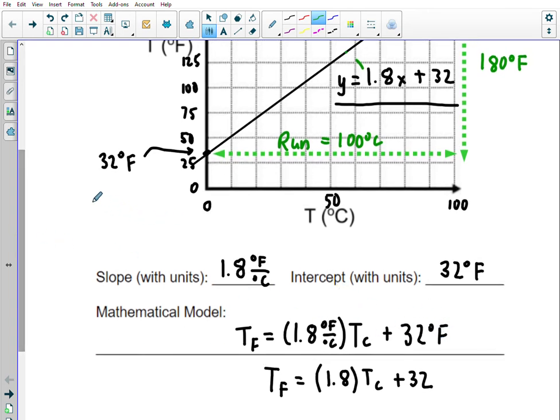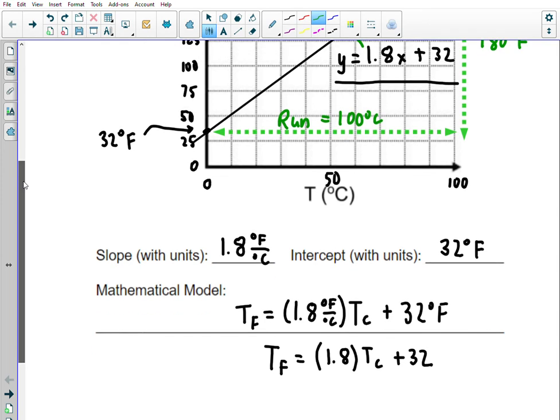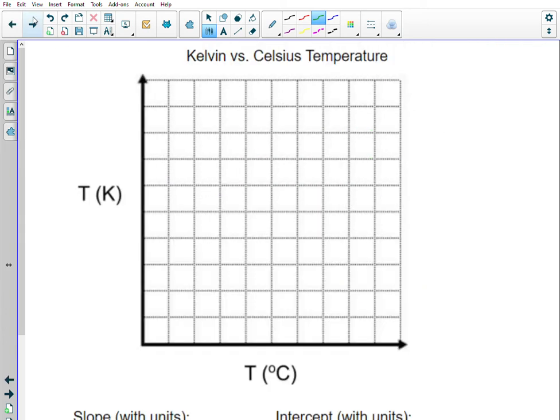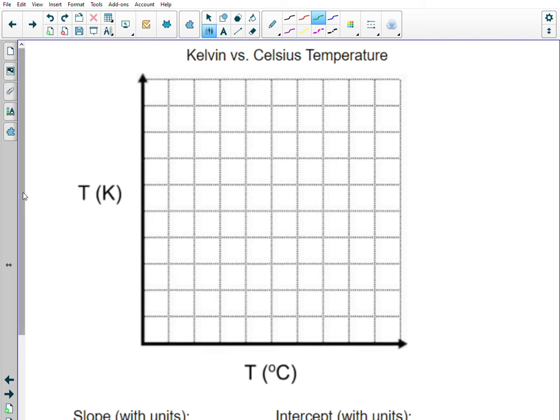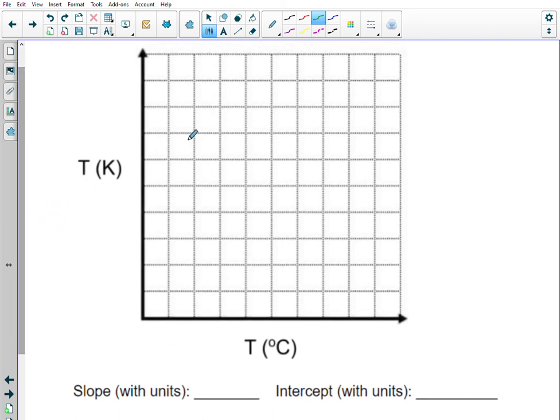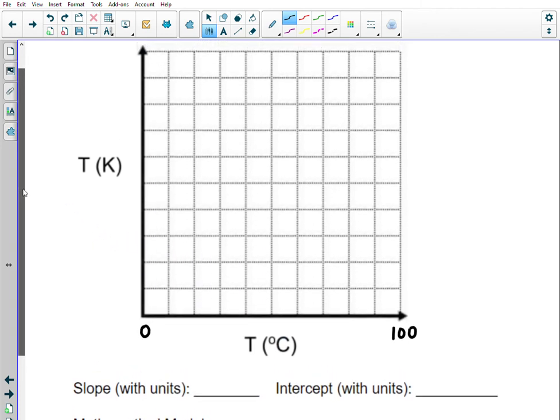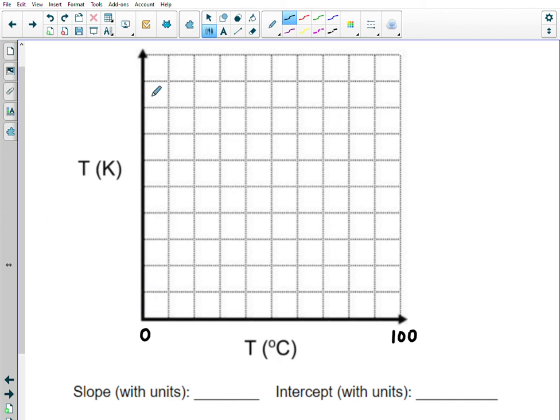Alright, so let's look at Kelvin versus Celsius. This one I think most groups were starting in class but maybe didn't finish. If you look at your data table, your Celsius temperatures should run from about 0 to 100—again, the ice water bath to the boiling water bath—and your Kelvin values are all quite large, like well over 200. This is where Google Sheets probably didn't include the zero point.